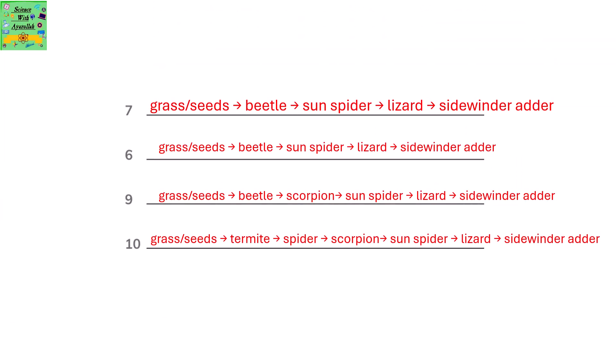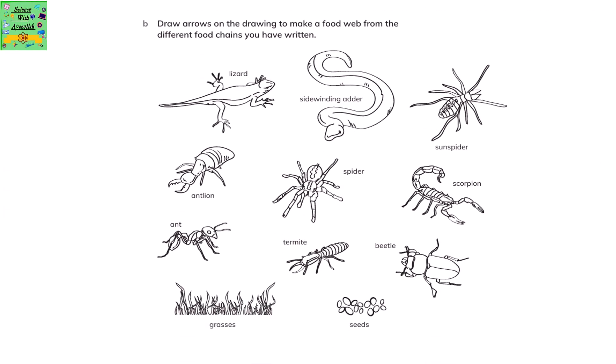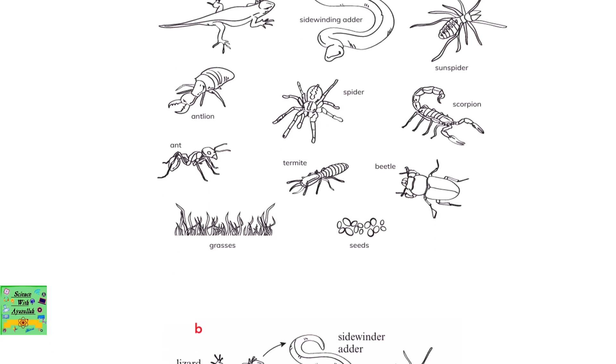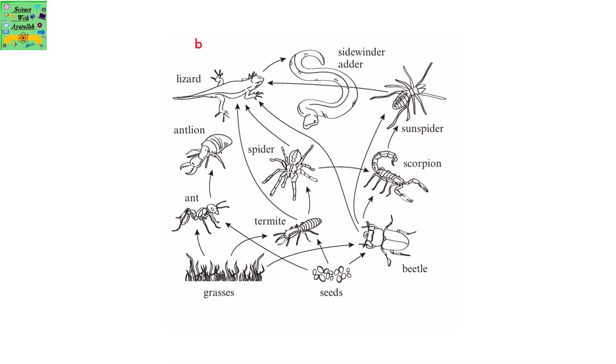Here are a few more food chains. Draw arrows on the drawing to make a food web from the different food chains you have written — all 10 of them. You need to draw arrows to form a food web. Here are the arrows drawn.